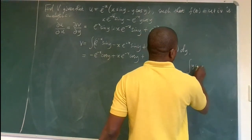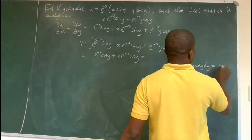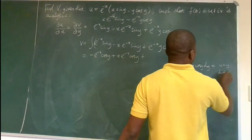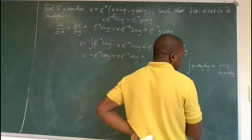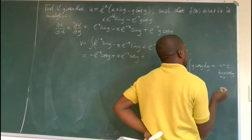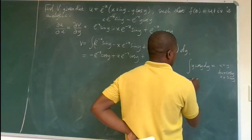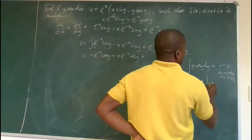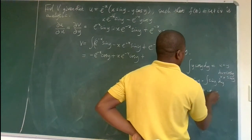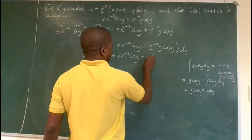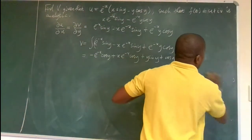Let's compute ∫y·cos(y) dy quickly using integration by parts. Let u = y and dv = cos(y) dy, so v = sin(y). By the IBP formula, this equals y·sin(y) minus ∫sin(y) dy, which gives y·sin(y) + cos(y).